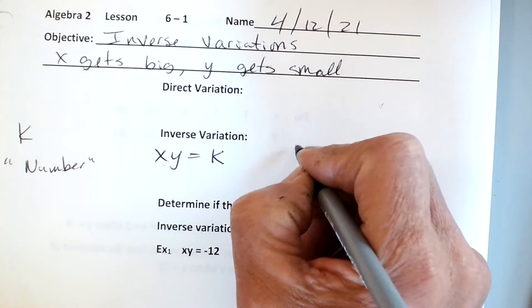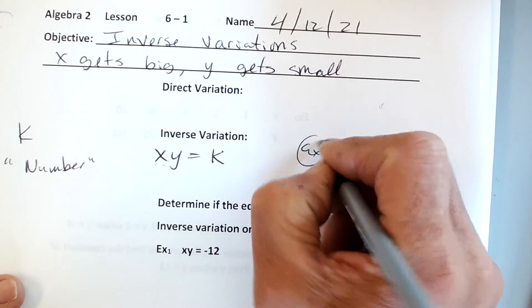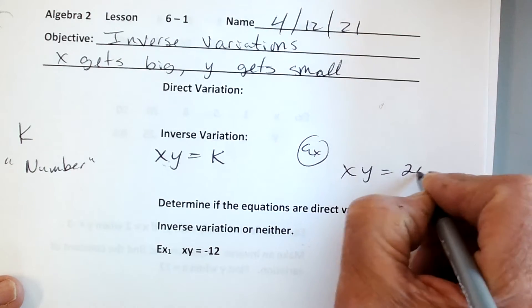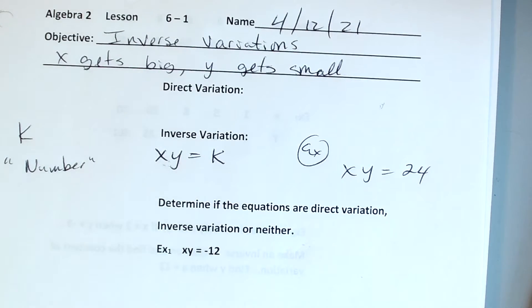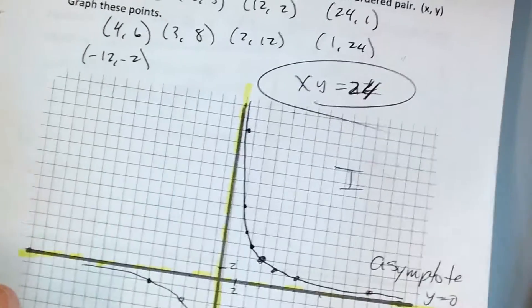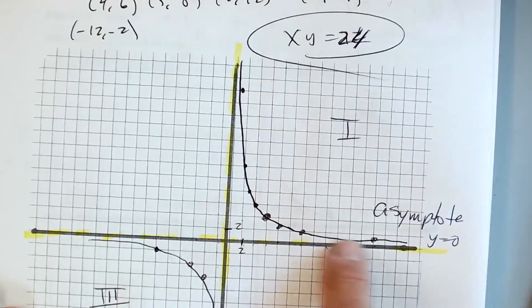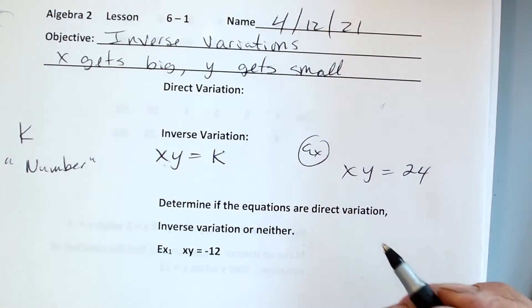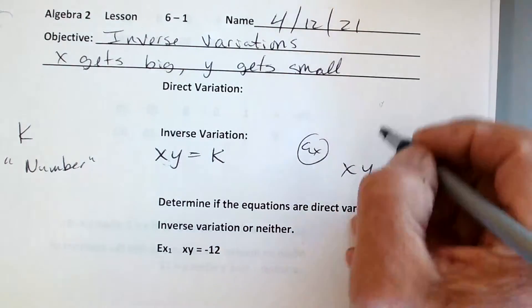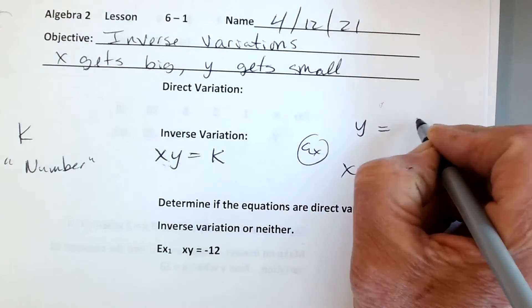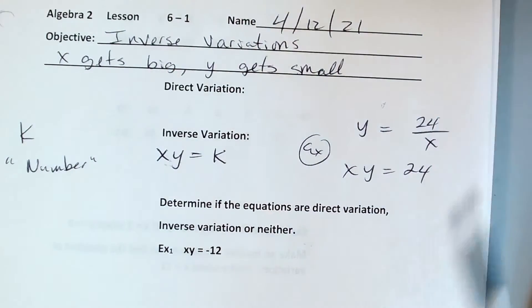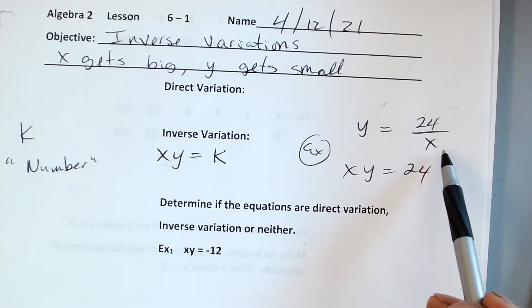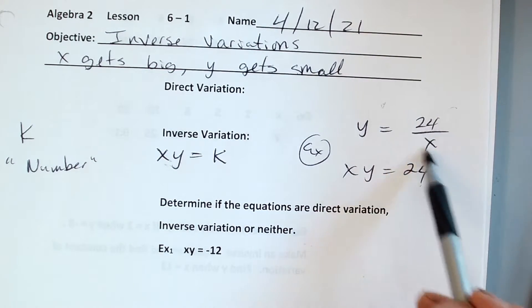We saw in the warm-up, as an example, we had x times y equals 24. We saw that our graph looked like that. As x got big, y got small. That's why it's called an inverse variation. It could also be written as y equals 24 divided by x. One of the things we can't do is divide by 0.